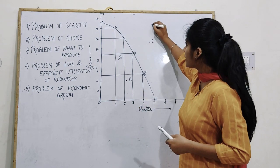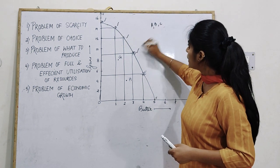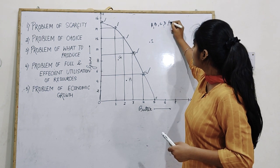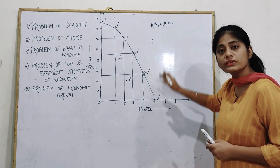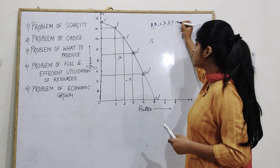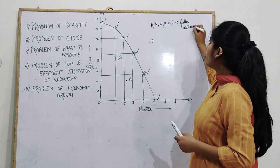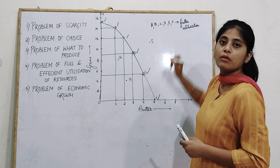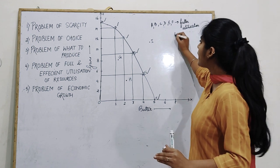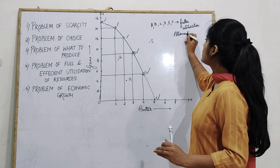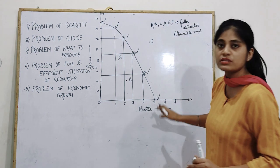The points A, B, C, D, E, and F which are on the PPC curve symbolize fuller utilization of resources — means you are utilizing the resources completely. These are also called attainable combinations, meaning you can attain these combinations.